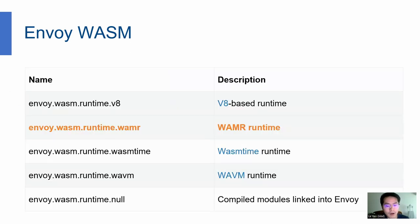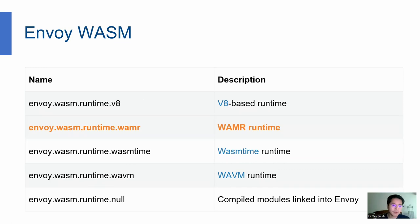Currently, N1 supports the following five WASM runtimes in its latest release. And one more is what we are bringing to N1. The default build of the N1 binary is the V8 runtime, which is based on the V8 engine in the browser. WAVM is another runtime with different features. The null runtime is the default complete module linked into N1.